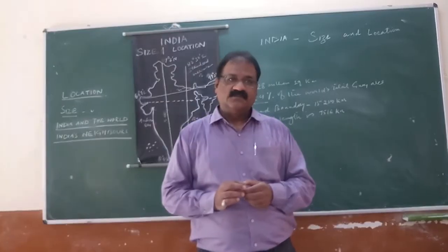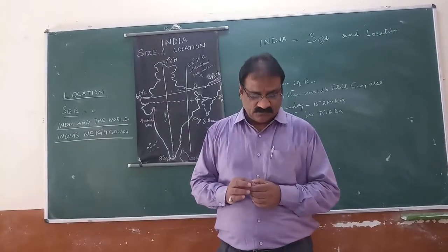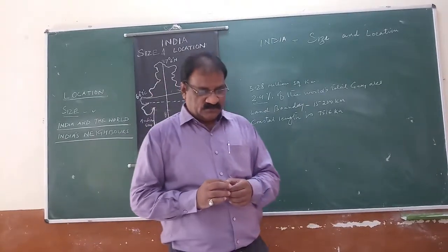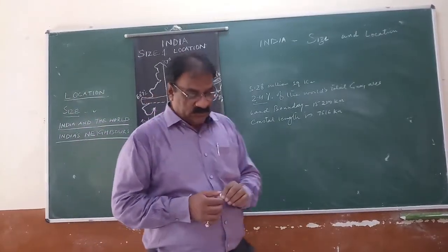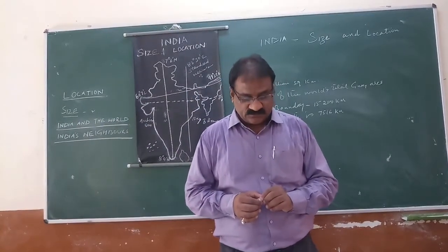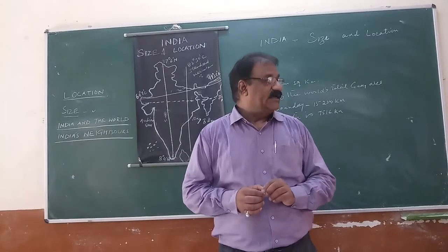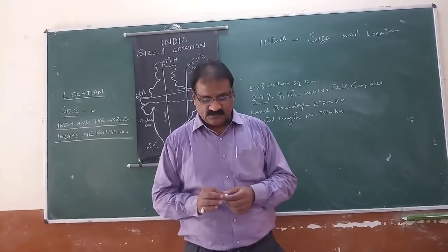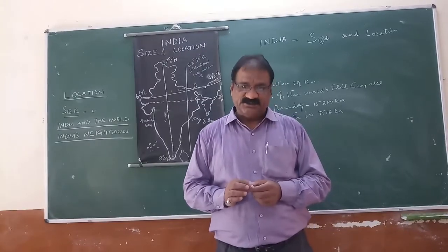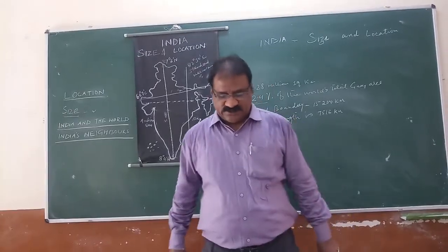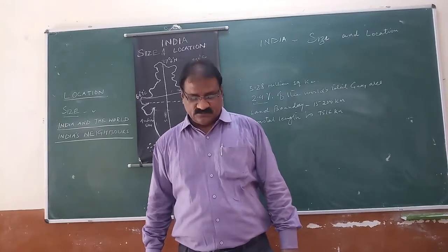India occupies a very important strategic position in South Asia. India shares its land boundary with Pakistan and Afghanistan in the northwest, Nepal, Bhutan, China, and Tibet in the north, and Myanmar and Bangladesh in the east. Our southern neighbors across the sea consist of two island countries — Maldives and Sri Lanka. Sri Lanka is separated by a narrow channel formed by the Palk Strait. The Maldives islands are situated to the south of Lakshadweep Islands. India has a strong geographical and historical link with her neighbors.